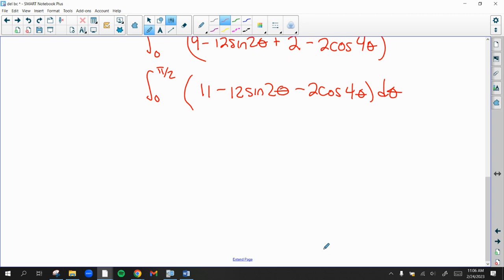So let's do this. The integration should be relatively easy. The integral of 11 with respect to theta is 11 theta. The integral of sine of 2 theta is negative 1 half cosine of 2 theta. So the negative would make this a positive. The 1 half would make it 6 cosine 2 theta. The integral of cosine 4 theta is 1 fourth sine of 4 theta. So this would be negative 1 half sine of 4 theta. So that's the integral.